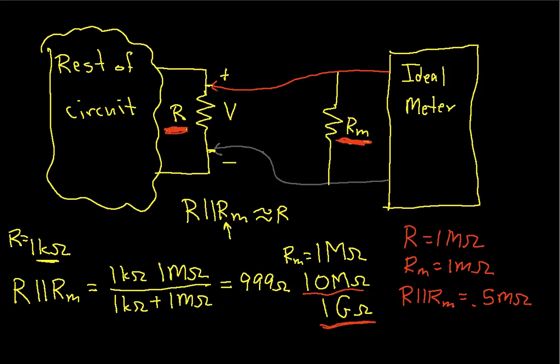And if you are measuring voltage across a resistor whose value is comparable to the input impedance, you're going to get a fairly significant error in your measurement.